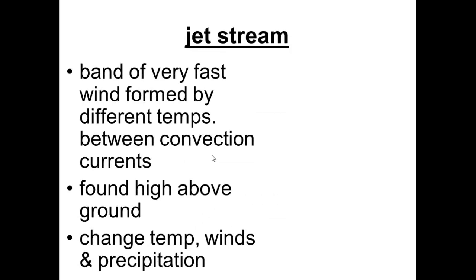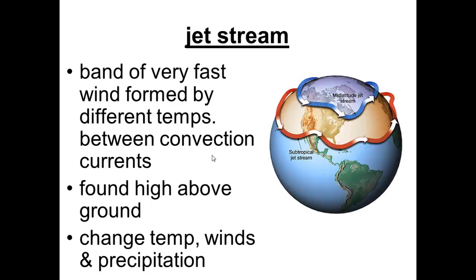Jet streams are high above the ground between these huge convection currents that I was talking about before. A jet stream is a band of very fast wind formed by different temperatures between the convection currents. Even though it is very high, a jet stream affects air movement. Changes in temperature, winds, and precipitation result. So here's a picture of jet streams.